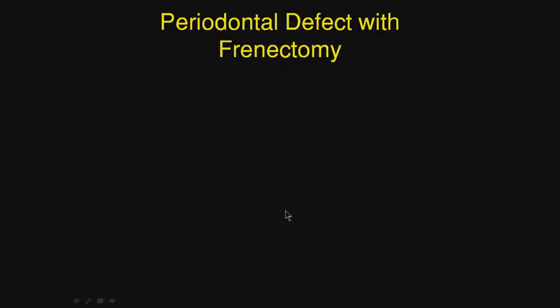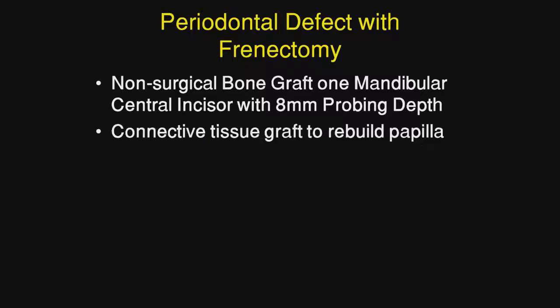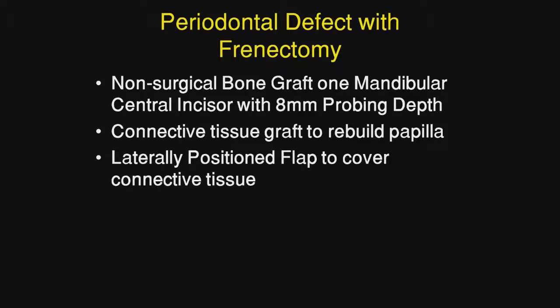This is an interesting case — a periodontal defect with a frenectomy. We did a non-surgical bone graft on the mandibular central incisor, which was probing 8 millimeters, at the time we did the frenectomy technique. Connective tissue was then used to rebuild the papilla, and a lateral position flap was used to cover the connective tissue in the interdental area.